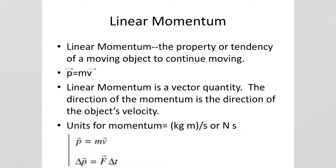Linear momentum is the property or tendency of a moving object to continue moving. You can see the equation for momentum here. P stands for momentum. Notice that it has an arrow over the P, which indicates that momentum is a vector, so both magnitude and direction matter. Momentum is equal to an object's mass times its velocity. Note the arrow over the velocity to indicate that velocity is also a vector.